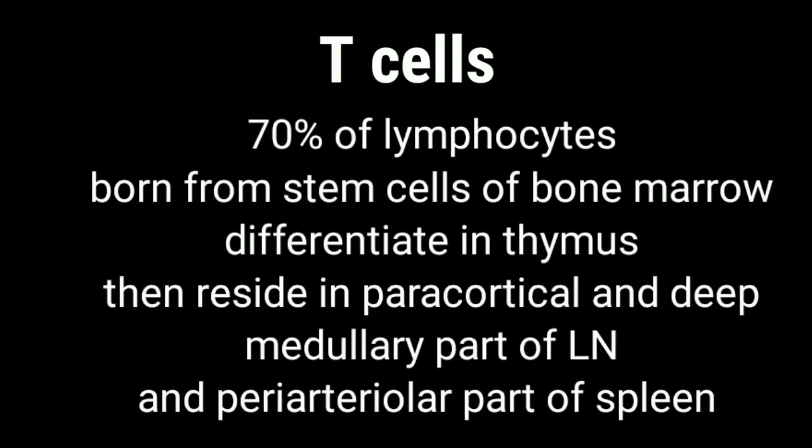T-cells also have their origin from the stem cells of the bone marrow. From there they go on to develop further in the thymus, and ultimately they end up in the pericortical and deep medullary part of the lymph nodes and also the peri-arteriolar sheets of the spleen.